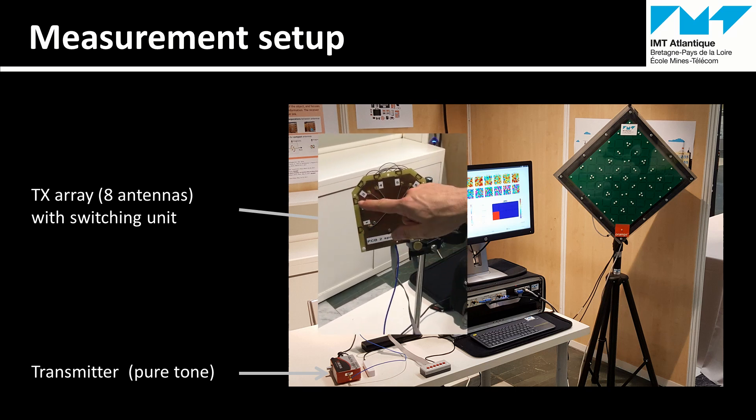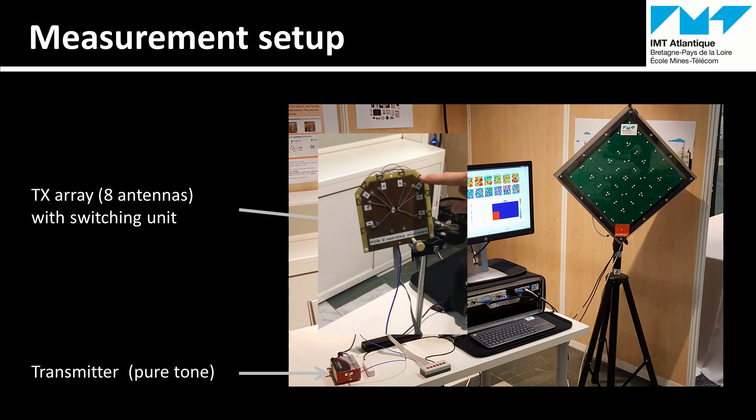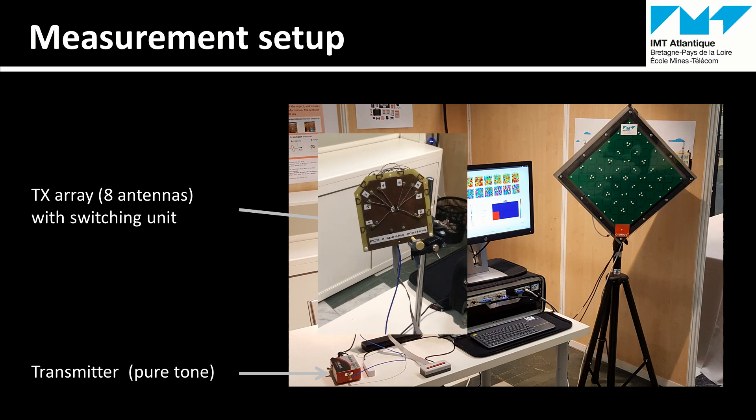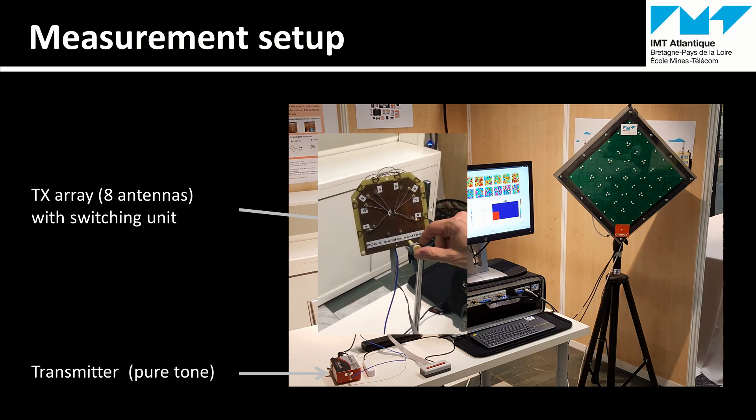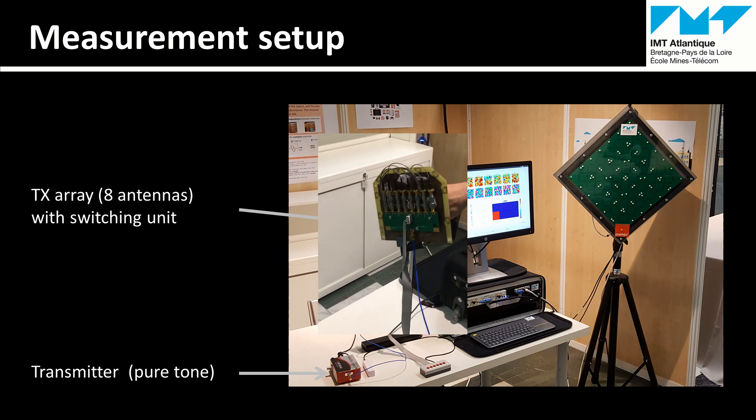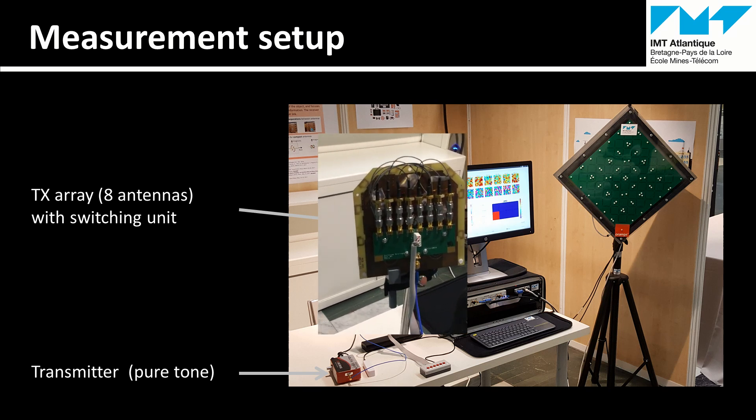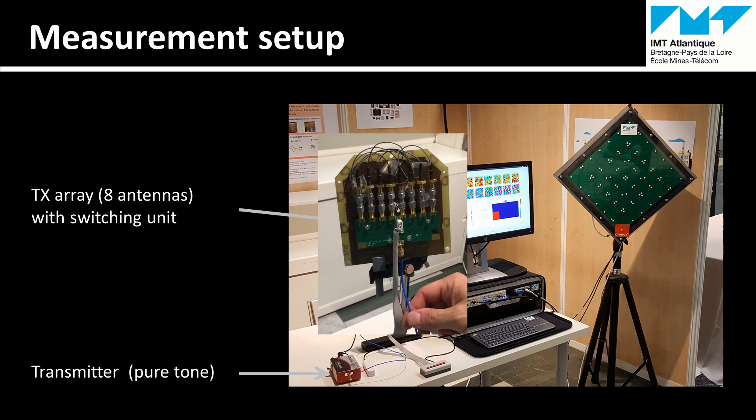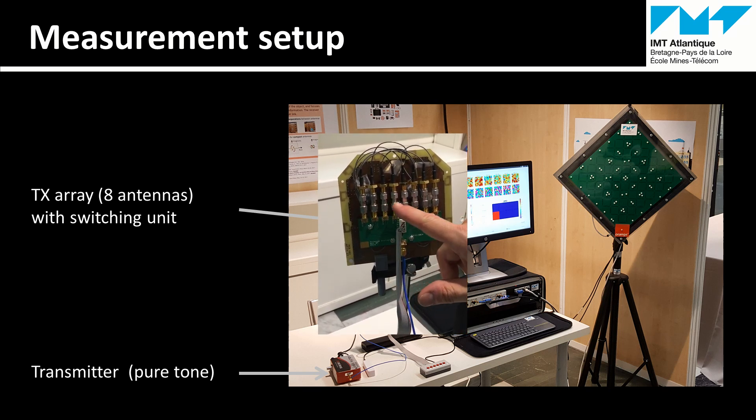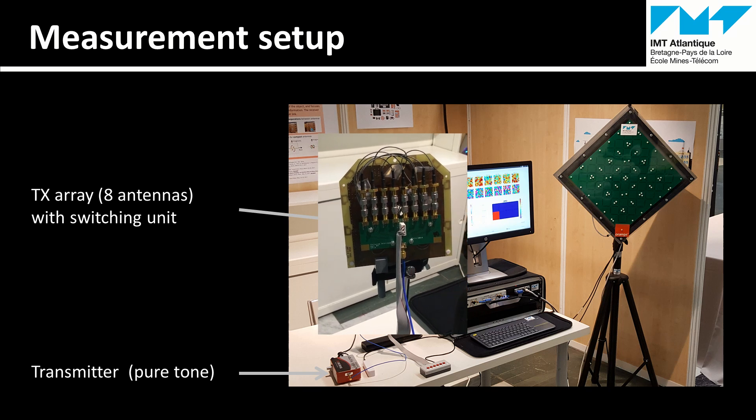You can see here the 8 antennas, which represents the 8 spatial modulation symbols. On the other side, you have an RF switch with 8 outputs connected to the 8 antennas.